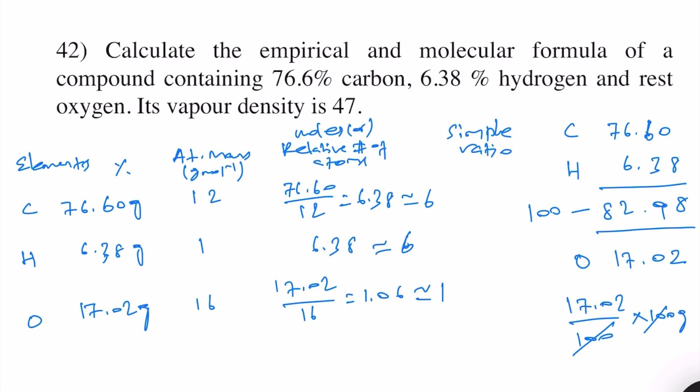So for simple ratio we take the smallest value and divide by it. So 6 by 1, that will be 6. 6 by 1, this is also 6. 1 by 1 is equal to 1. And therefore we have 6 times carbon, 6 times hydrogen, and 1 times oxygen. So that is our empirical formula.